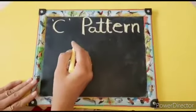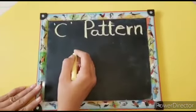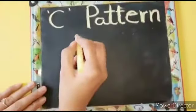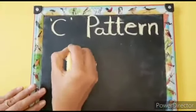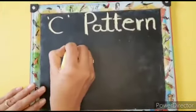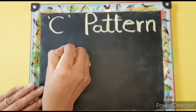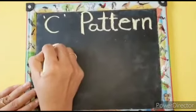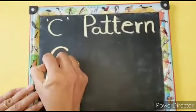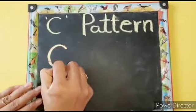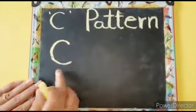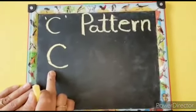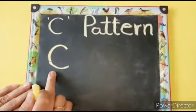Now we will see how to write the C pattern on the slate. C pattern means a curve. Keep your pencil on the slate, give a curve to the left side, come down and complete the curve. Isn't it letter C, children? That's why it is called C pattern.